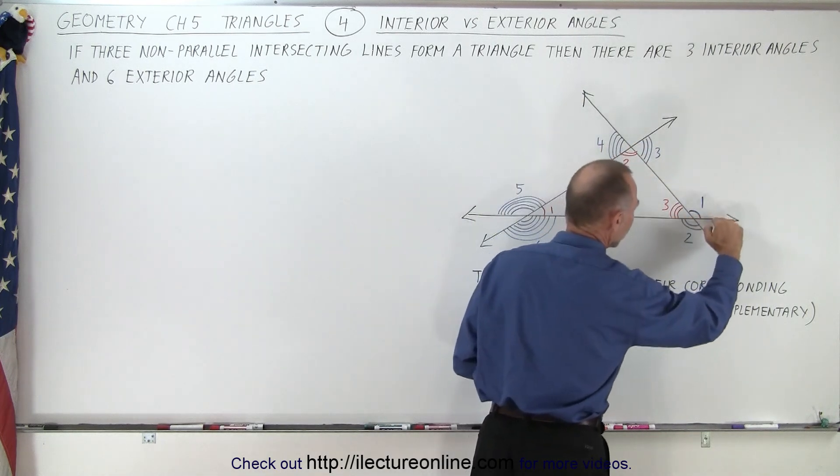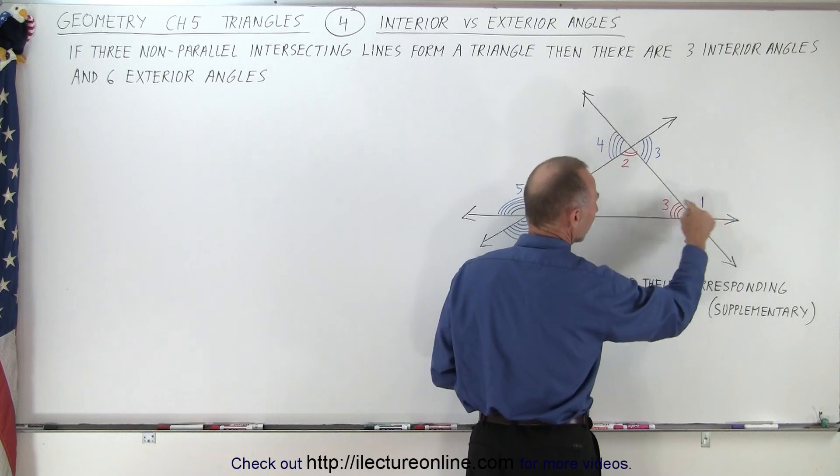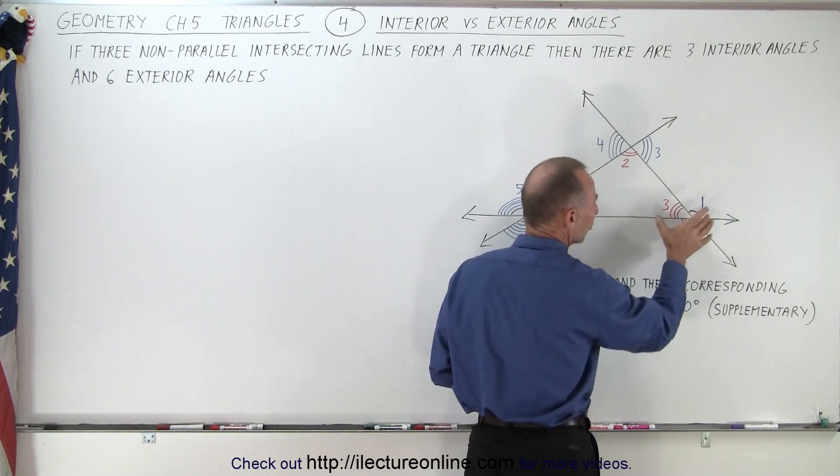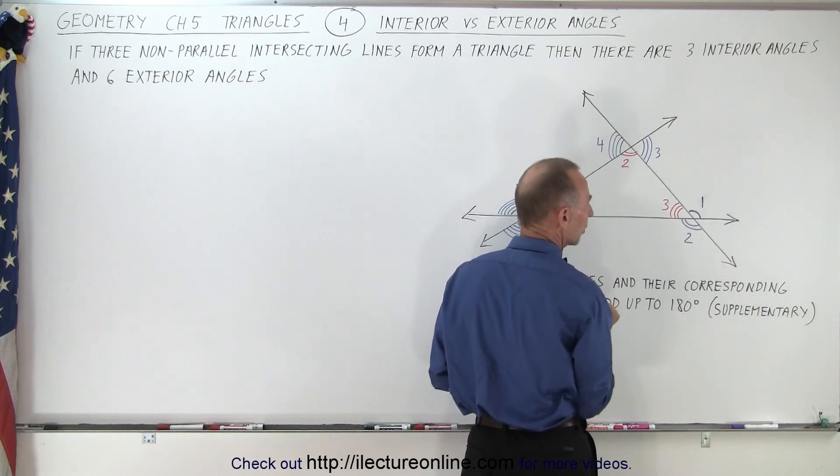So when you draw a line straight across like that, notice that this angle and this angle together are essentially supplementary angles, and they add up to 180 degrees.